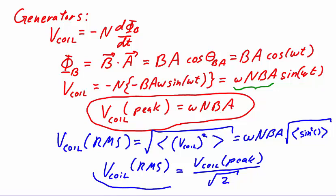This formula between RMS and peak does not just apply to the voltage on a coil in a generator, but in fact applies to any oscillating quantity. The peak is always larger and so we divide that one by square root of two in order to learn the RMS.